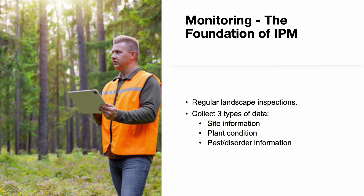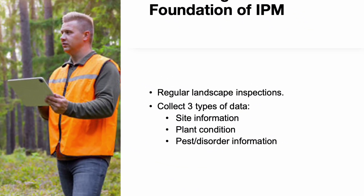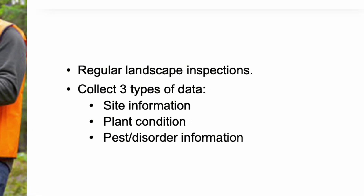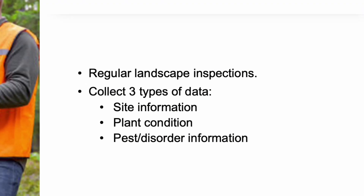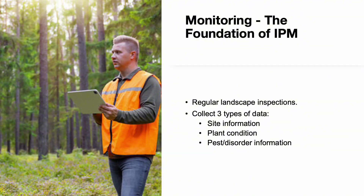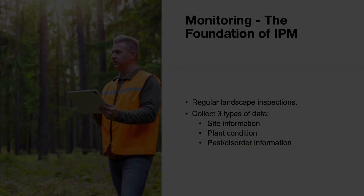Monitoring is the backbone of any effective IPM program. We conduct regular inspections to gather three types of information. First, we observe the site itself, looking at conditions like shade, water flow, or construction. Next, we examine the plants, checking for signs of stress or decline. Finally, we collect data on pests or disorders we observe. This layered approach helps us make informed, timely decisions.